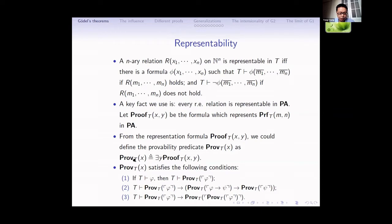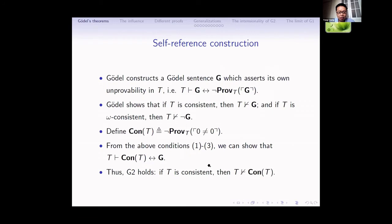We can show that this provability predicate satisfies the following conditions: D1 — if phi is provable in T, then 'phi is provable' is provable in T; D2 — if phi implies psi is provable, and phi is provable, then psi is provable; D3 — T can prove that if phi is provable in T, then 'phi is provable' is provable in T. These are the famous Hilbert-Bernays-Löb derivability conditions. The last step is the self-reference construction.